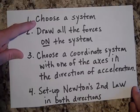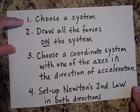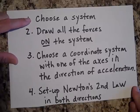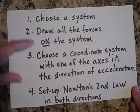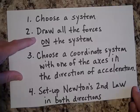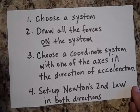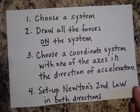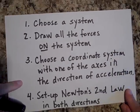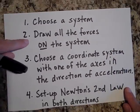First, choose a system to study — usually it's an object, but sometimes it's several objects combined. Then draw all the forces that are on that object. Only the forces on your system, not just all the forces you can find. This is called a free body diagram.